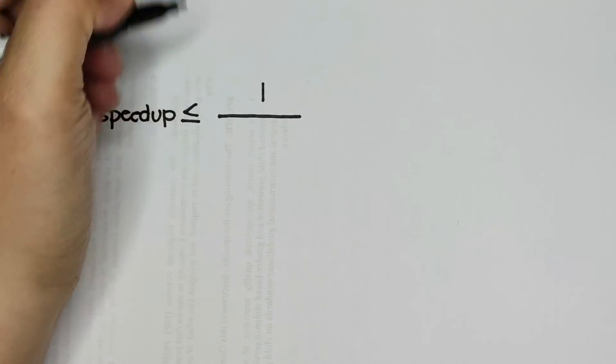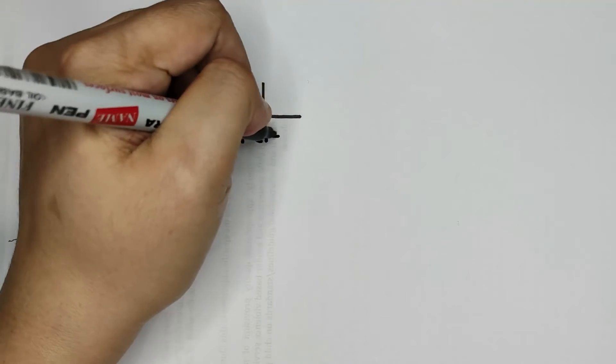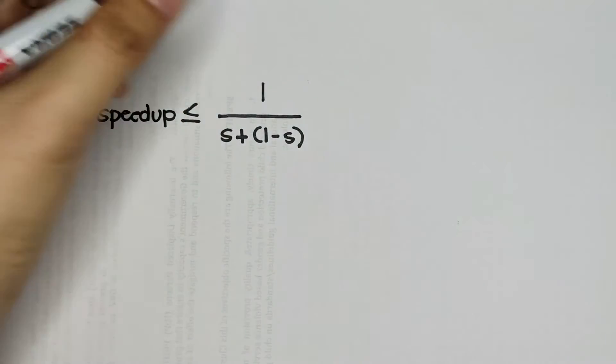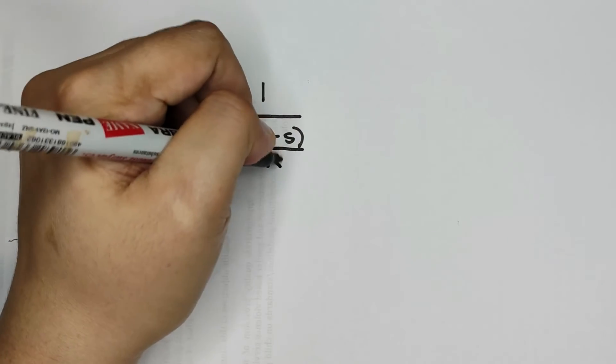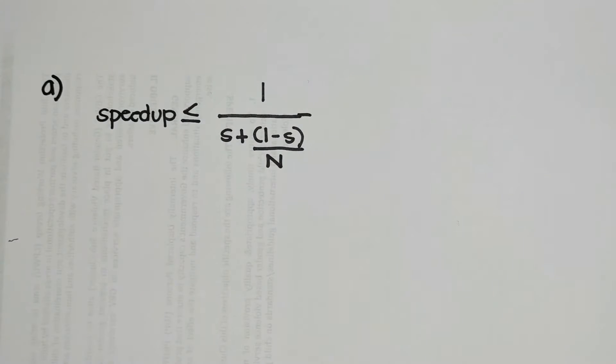Let's remember the formula for Amdahl's Law. Speed up is less than or equal to 1 over S plus (1 minus S) over N. This is the formula for Amdahl's Law.